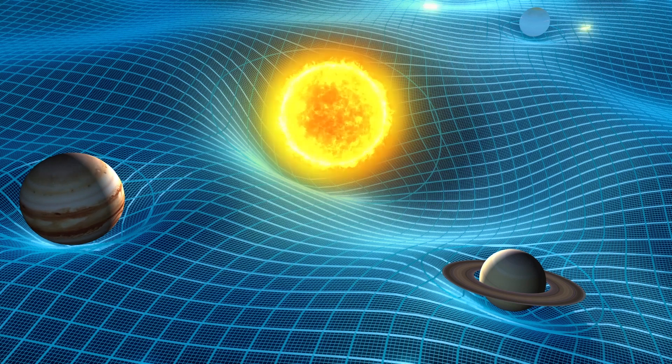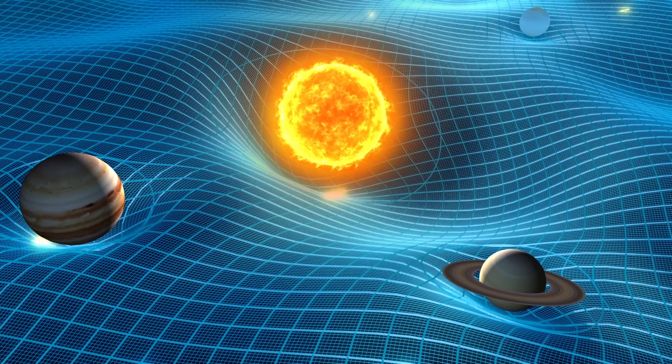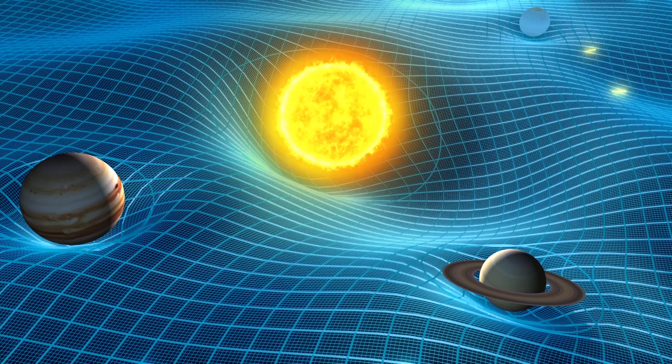One consequence of this idea is that light is also affected by gravity. After all, if spacetime is curved, then everything must follow along a curved path, including light.